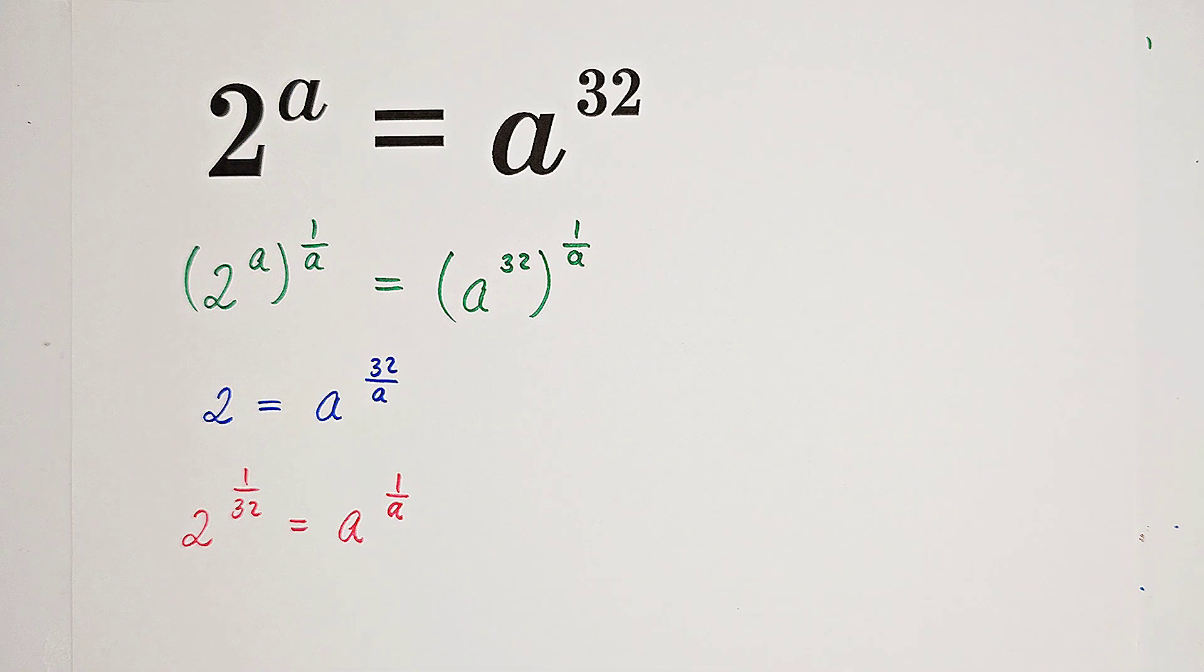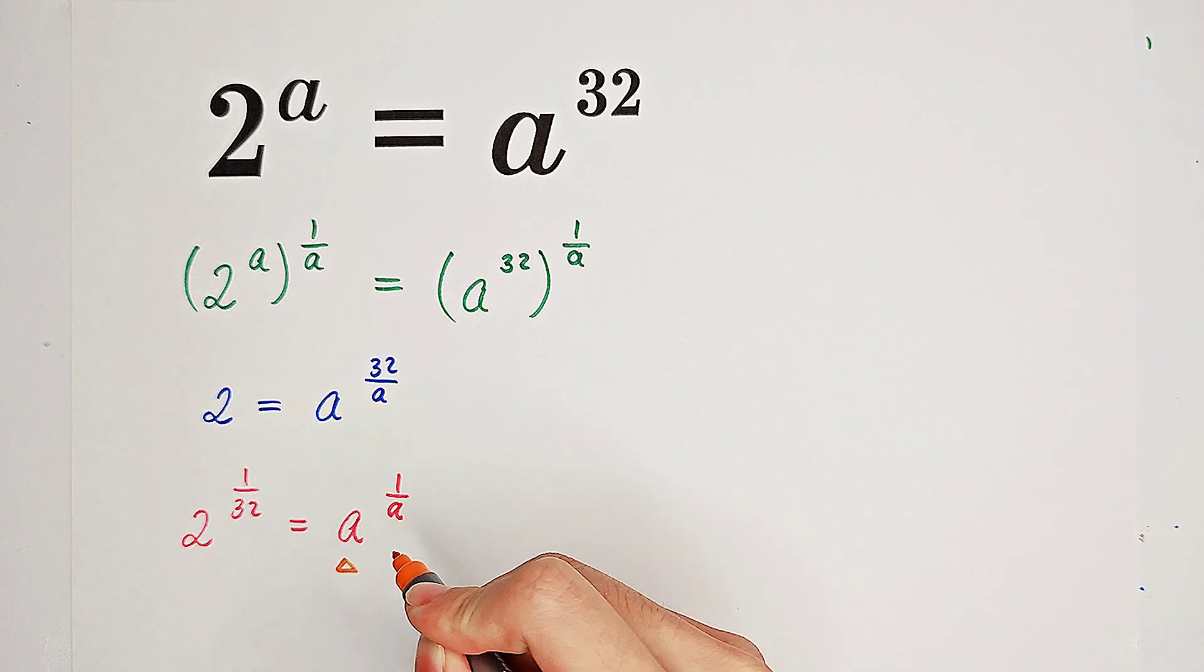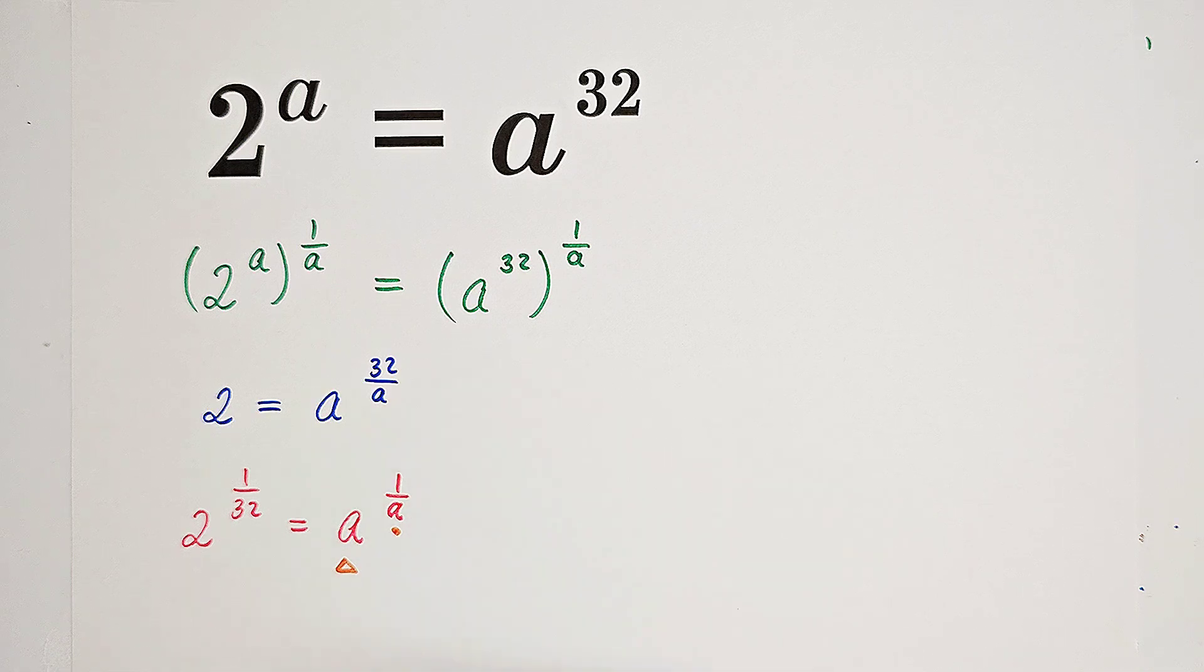Very good. Now, you see, our right-hand side has the form of something to the power of its reciprocal. So now, I'm going to transform the left-hand side and let it also have the same form.